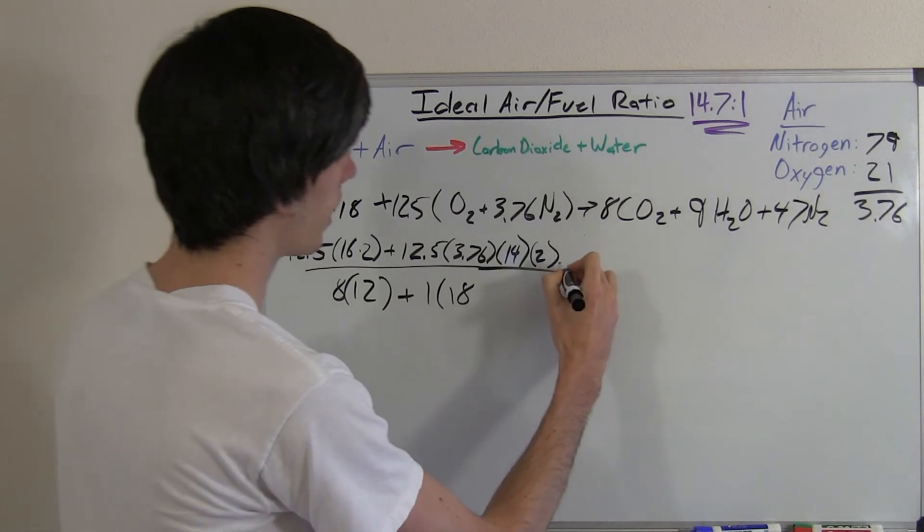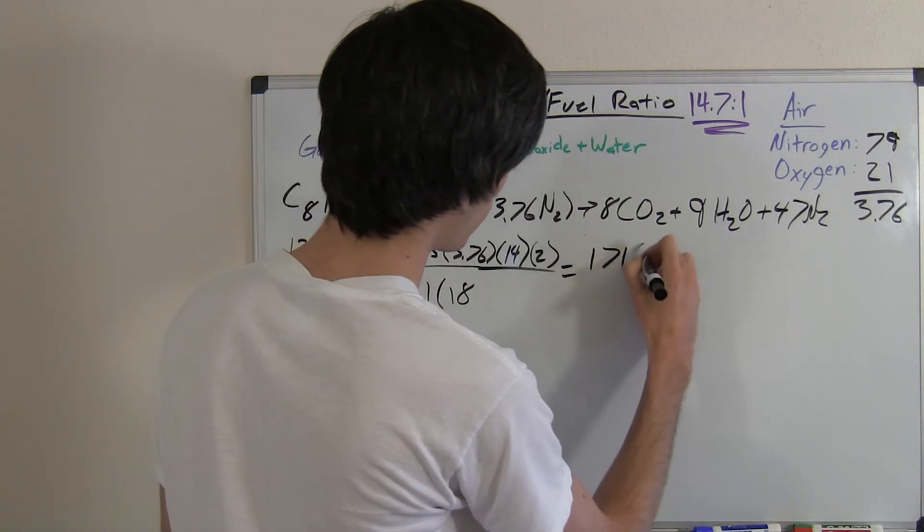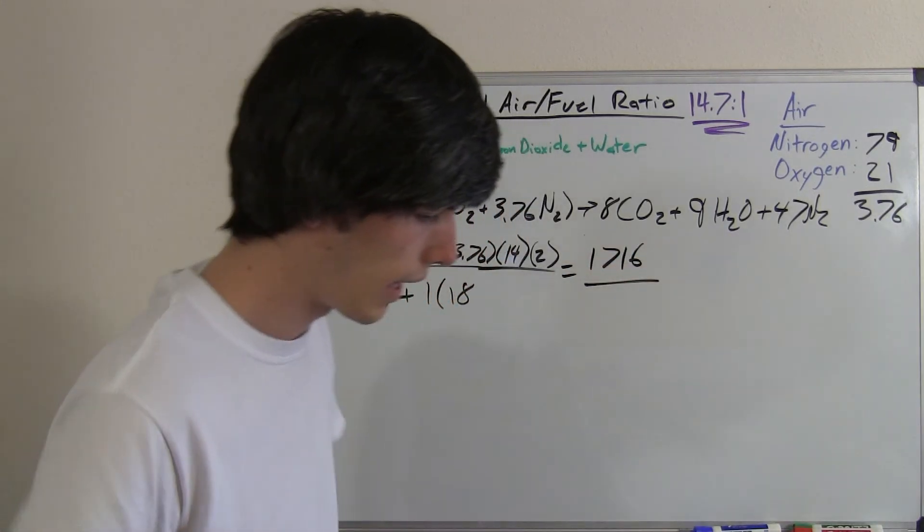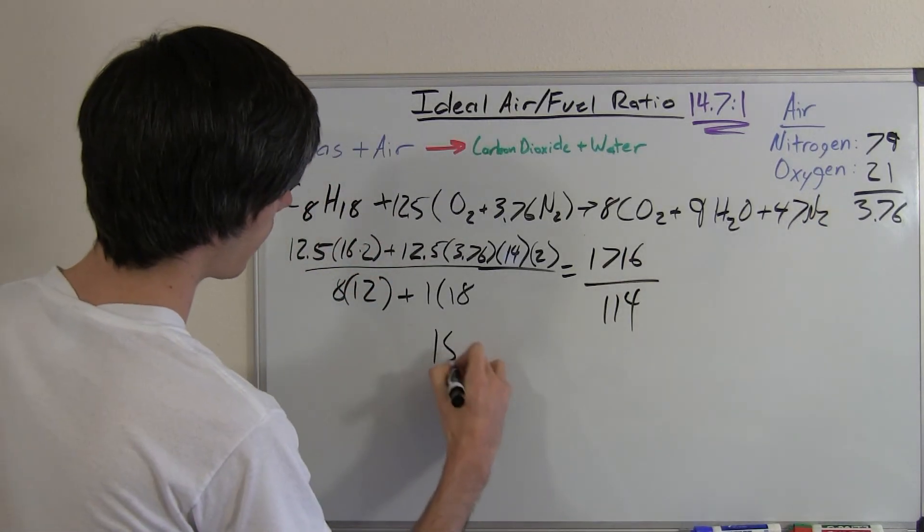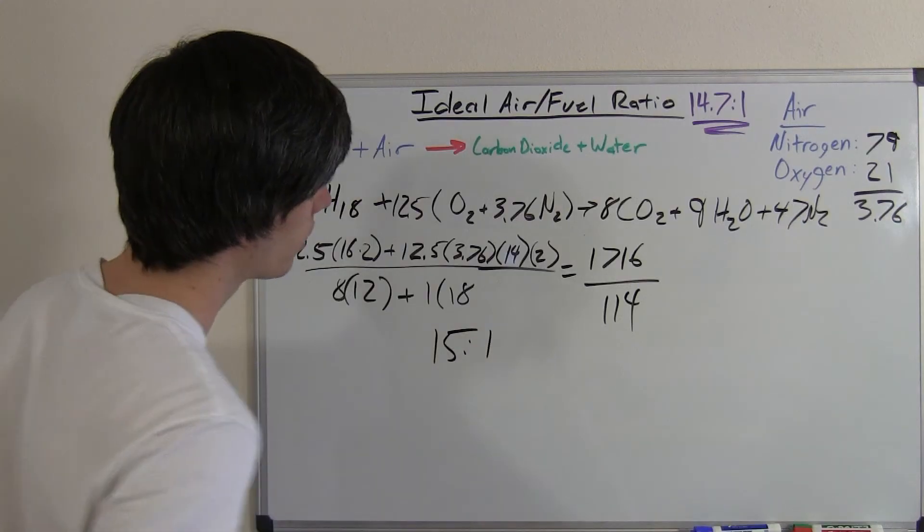So when you multiply all this out, you get about 1716 on the top, and 114 on the bottom. You divide that, and you get an air-fuel ratio of 15 to 1.